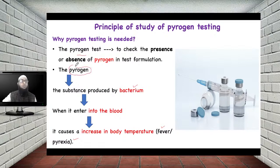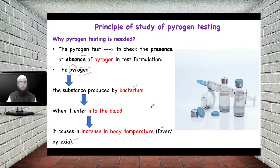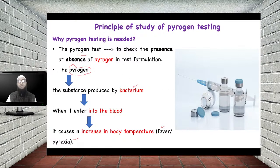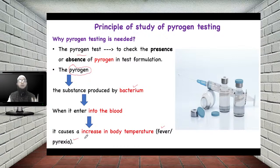Most parenteral formulations are generally given inside the body by injection, so they have more access to the blood circulation. Obviously, if this pharmaceutical formulation is contaminated with bacteria, or with the substance released by bacteria — that is, pyrogen — then after taking the injection of such a parenteral formulation, the patient will suffer from fever or pyrexia. So to pass the test, this parenteral formulation must not contain pyrogen.